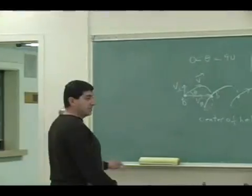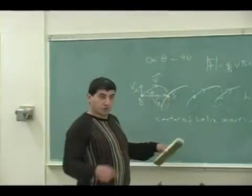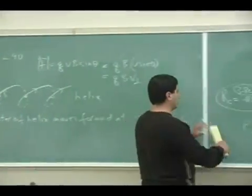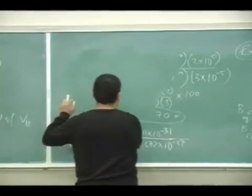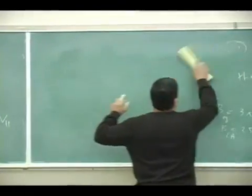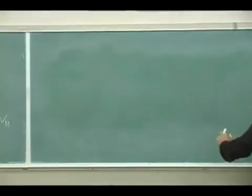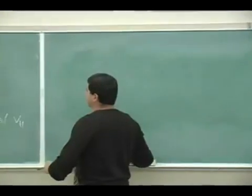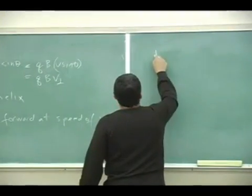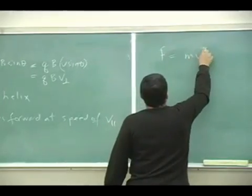And then what's the radius of the orbit? So we can now come up with another equation. So what's the radius of the orbit? So now you have F equals mv squared over R.